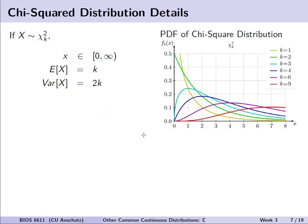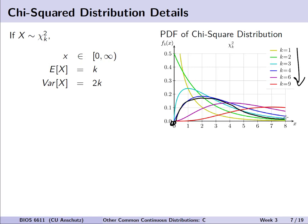As the degrees of freedom k changes, we get different shapes for the probability density function. As shown in the figure on the right, as the degrees of freedom increases from 1 up to 9, we see it ranges from a line that goes straight down with no real peak, to shapes that start near 0, go up and then down, and various forms in between.